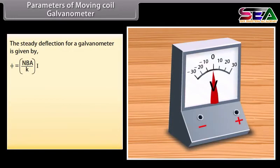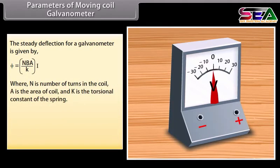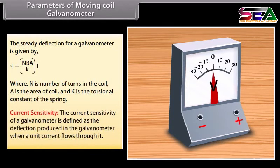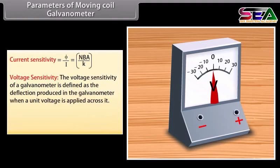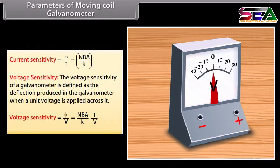Parameters of moving coil galvanometer: The steady deflection is given by phi = (NBA / K) × I, where N is the number of turns, A is the area of the coil, and K is the torsional constant of the spring. Current sensitivity is defined as the deflection per unit current: phi / I = NBA / K. Voltage sensitivity is the deflection per unit voltage: phi / V = NBA × I / (K × V).